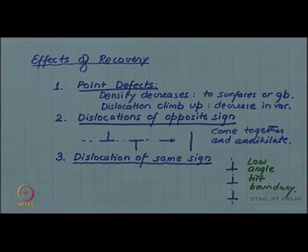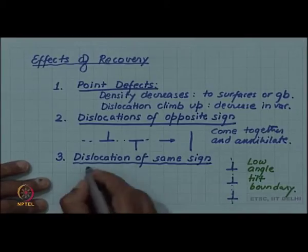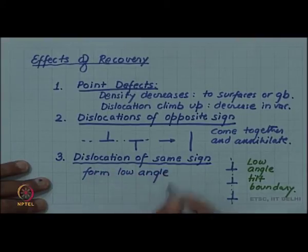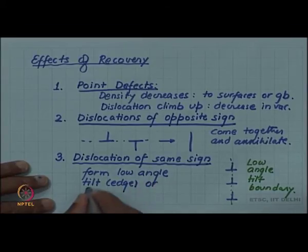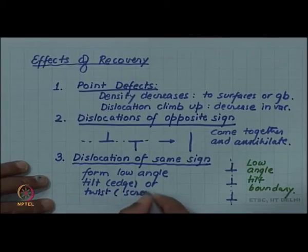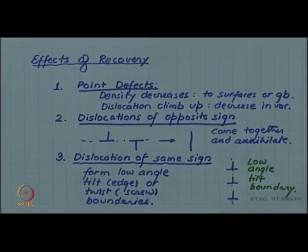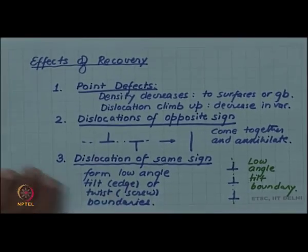A similar process occurs with screw dislocations. If screw dislocations come together, they form a grid of dislocations which gives us a low angle twist boundary. So, dislocations of the same sign form a low angle tilt boundary for edge dislocations, or a twist boundary for screw dislocations. This reduces the strain energy and helps in the recovery of electrical properties — the electrical conductivity — which we discussed in the introduction to the annealing process.